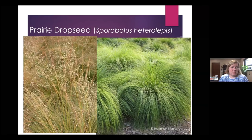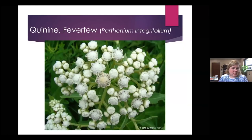Grasses are pretty important, just as cover. Prairie dropseed looks nice in the garden, gives you that swaying effect, and has good fall color. Wild quinine has a beautiful white flower, is also a good cut flower, fragrant, and attracts butterflies.